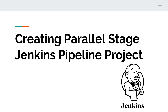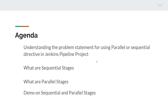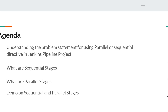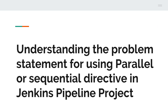Hello everyone, this is Akash. Welcome to my channel. In this video I'm going to talk about how you can create a parallel stage Jenkins pipeline project. We've seen in the past how to create a Jenkins pipeline - by default a pipeline is sequential. We'll see the difference between sequential and parallel pipelines. As part of the agenda, we'll understand the problem statement for using parallel or sequential directives in Jenkins pipeline.